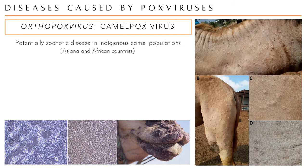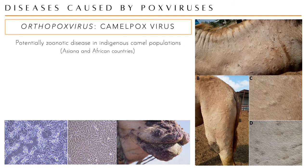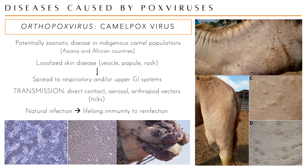Camelpox virus is a potentially zoonotic disease in indigenous camel populations. It has a narrow host range, affecting only camels, causing primarily local skin disease that can spread to the respiratory system and upper GI tract. Natural infection usually leads to lifelong immunity to reinfection.